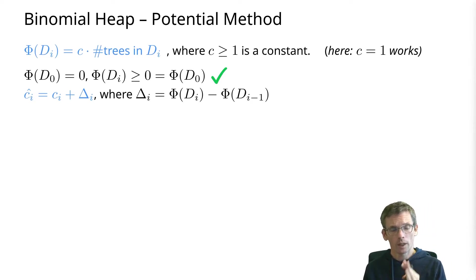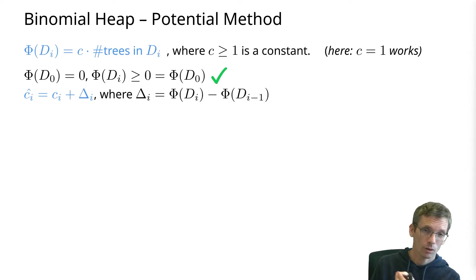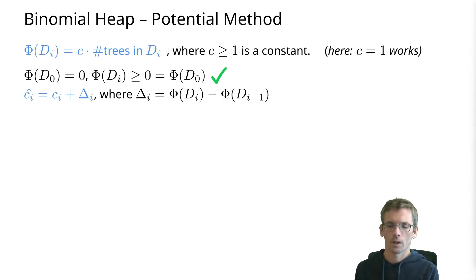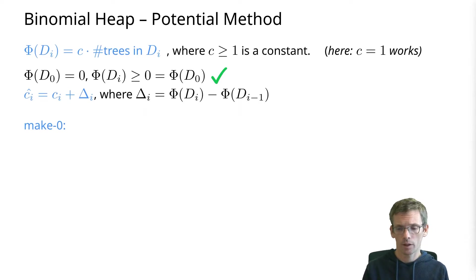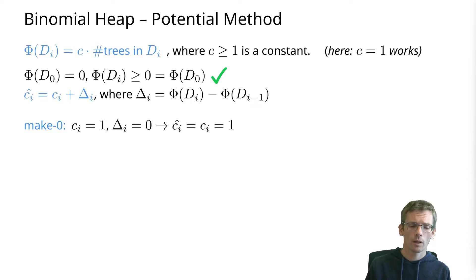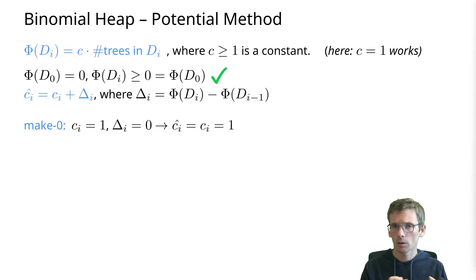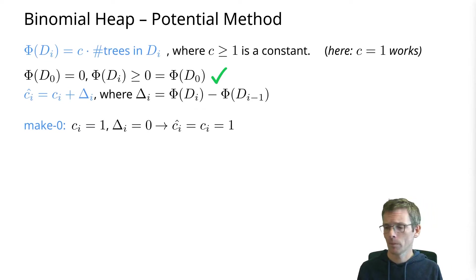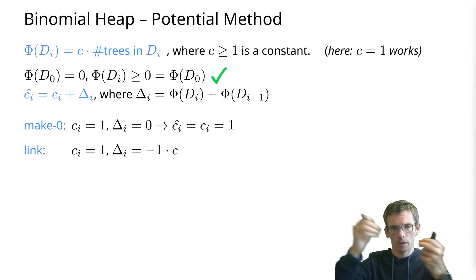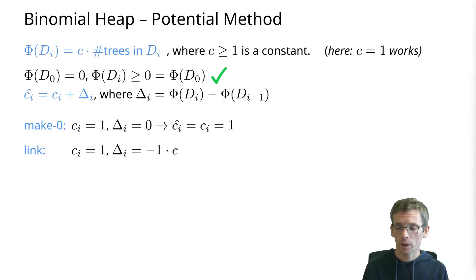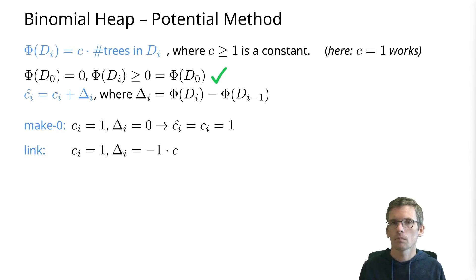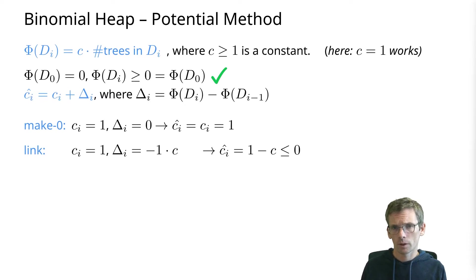We calculate amortized costs as actual cost plus change in potential for each operation. Make-zero: actual cost is one, change in potential is zero since we create no tree, so amortized cost is one. Link: actual cost is one since we build one link; change in potential is minus c since we lose one tree. Therefore amortized cost is one minus c, and since c is at least one, the amortized cost is at most zero.